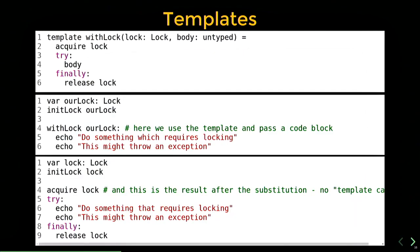Here's a first example of a template. We define a with-lock template that receives a lock and a body — an untyped block of code. Inside the template we acquire the lock, put the body inside a try-block, and in the finally clause we release the lock. When we use this template, we call it just like a normal language construct: we call with-lock, pass our lock, and pass a block of code. After substitution, that becomes: initialize the lock, acquire it, the passed code is in the try-block, and finally release the lock.